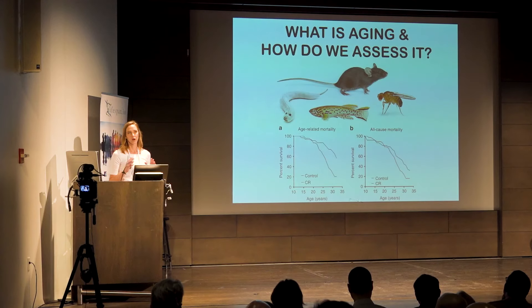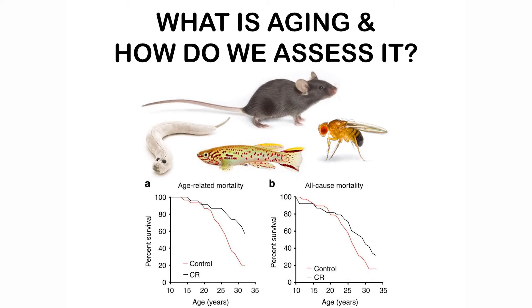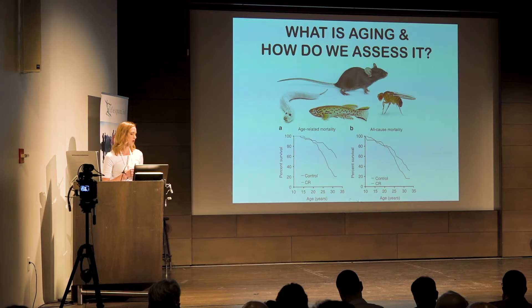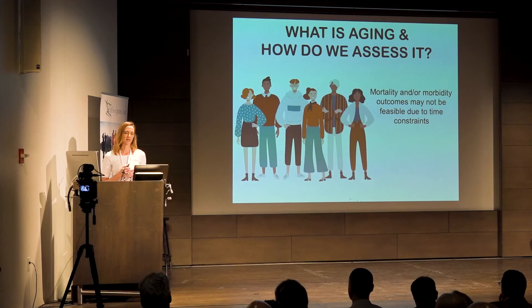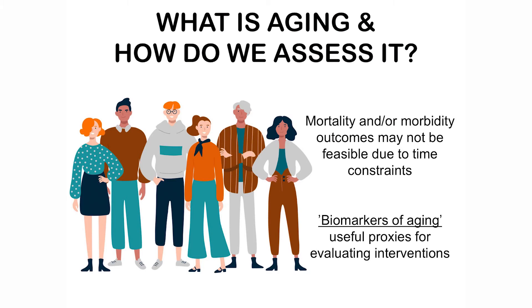For most model systems, we typically use life expectancy or all-cause mortality to assess whether we've had an impact on the aging process — we do an intervention, compare control to the intervention group, and see if we increase median or maximum life expectancy. However, that creates quite a bit of difficulty in humans who have quite long life expectancies. Morbidity and mortality outcomes may not be feasible due to time constraints if we're trying to do interventions earlier in the life course before major pathologies have taken hold. This is really one of the number one reasons why we need biomarkers of aging, or measures of biological age — useful proxies for evaluating different interventions.